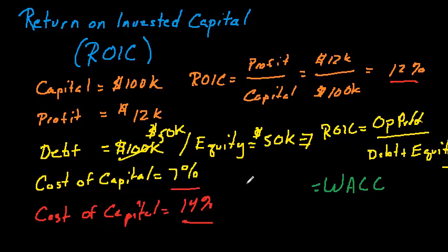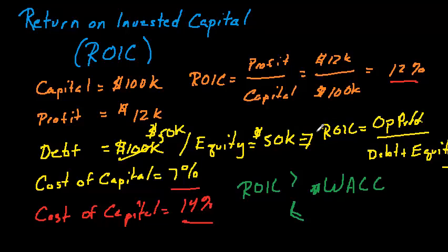The thing we compare ROIC to is the weighted average cost of capital. As an investor, you'd want to invest in a company whose return is above their cost of capital. If a company is not earning their cost of capital, they're destroying value, and they need to change something so that this inequality gets reversed. What can they do? They can improve their profit, reduce debt, or lower their cost of capital by restructuring their debt. In the next video, I'll show some historical figures for the airline industry and talk about what airlines are doing to improve their ROIC.